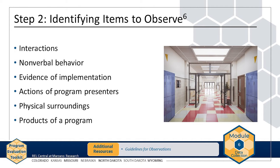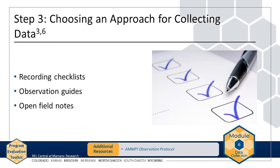For examples of each of these, refer to the Guidelines for Observations handout found on the Resources page of the website. Think about the approach you will use to collect your observation data. A few examples are recording checklists, observation guides, and open field notes. Recording checklists are standardized forms with preset questions and responses for observing specific behaviors or processes. Observation guides are forms that list behaviors or processes to observe with space to record open-ended data. Open field notes are a flexible way to document observations in narrative form. Recording checklists and observation guides are useful when looking for specific behaviors or processes, while open field notes are useful when the observer is not sure which behaviors or processes are important to capture.